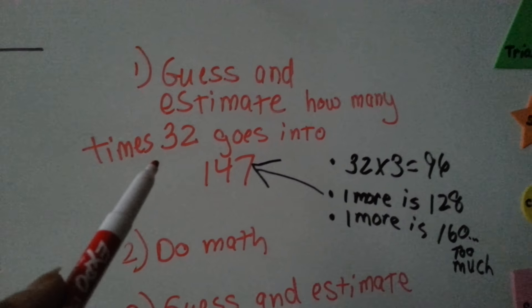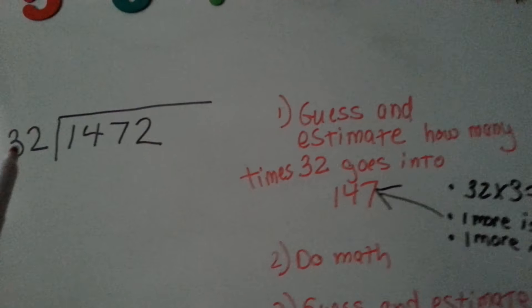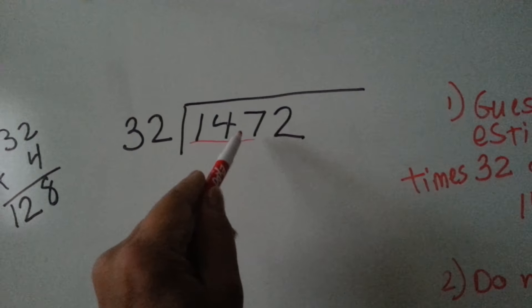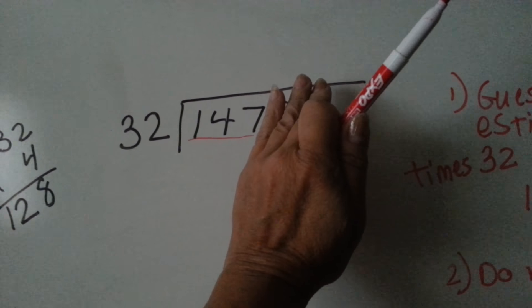How do we do this when we've got a big two-digit number here? Well, you guess and estimate how many times 32 goes into the 147 right here. You use the smallest number you can. You wouldn't say 32 goes into 14, that's too small, so we're going to choose 147.